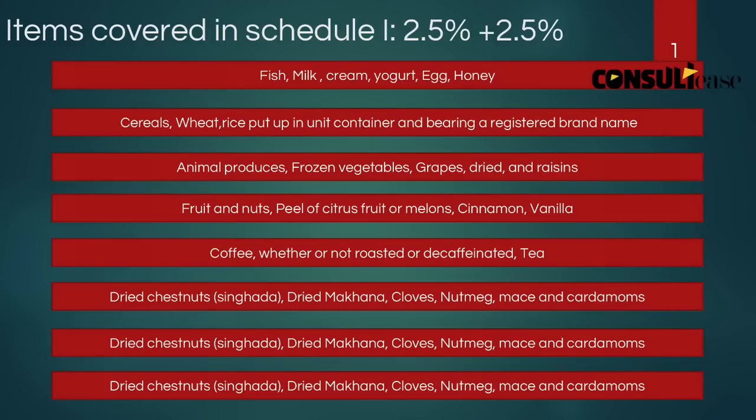In Schedule 1 at the 2.5% rate, the main HSN chapter headings covered include chapters 3, 4, 5, 7, 8, as well as headings 10, 11, 12, 15, 18, and 23. The tax rate will be 2.5% CGST and 2.5% SGST, meaning 5% total.